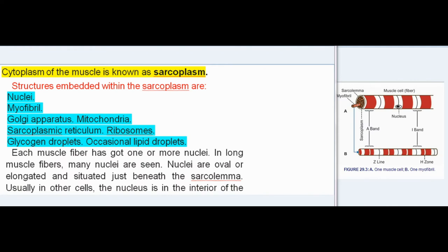Cytoplasm of the muscle is known as sarcoplasm. Structures embedded within the sarcoplasm are: nuclei, myofibril, Golgi apparatus, mitochondria, sarcoplasmic reticulum, ribosomes, glycogen droplets, occasional lipid droplets.